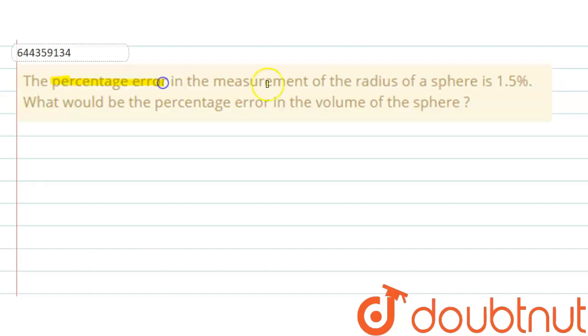the percentage error in the measurement of the radius of a sphere is 1.5%. What would be the percentage error in the volume of the sphere? So we are given the percentage error in the radius of the sphere to be 1.5%. Now let us try to calculate the percentage error in the volume of sphere.